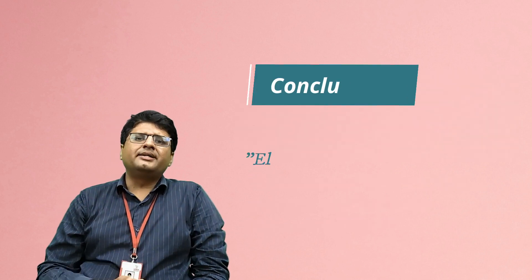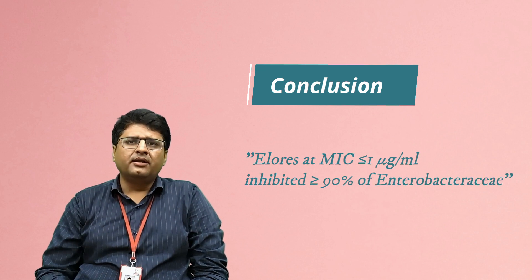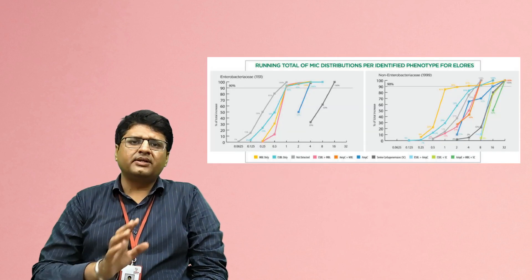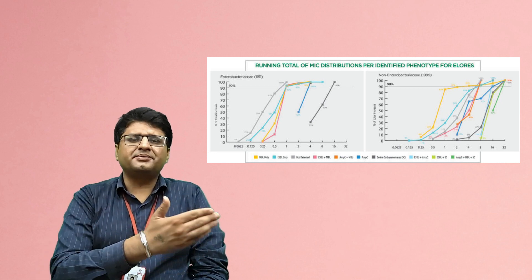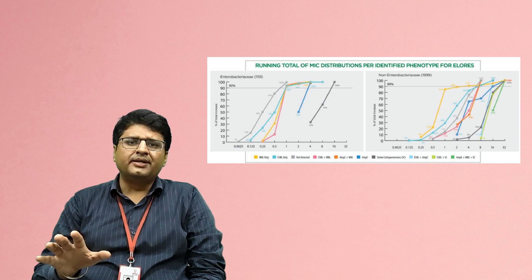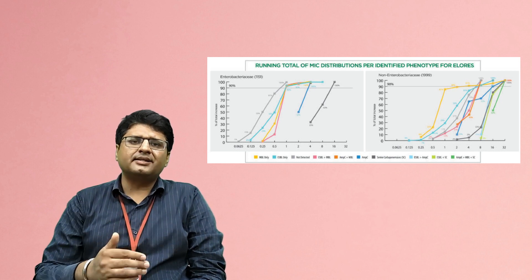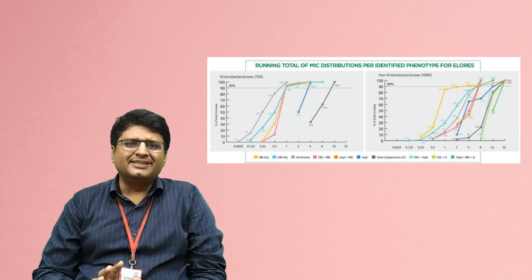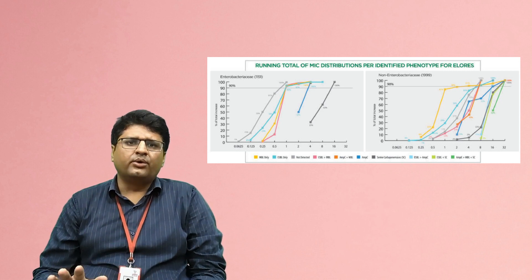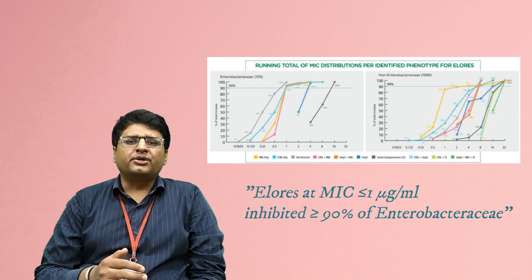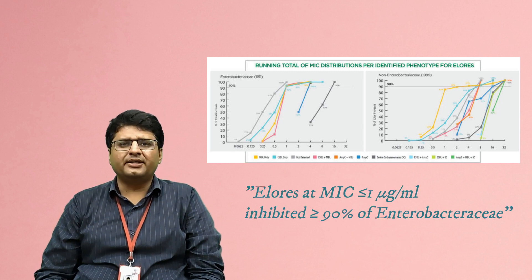LORES at an MIC of 1 µg/mL or less inhibited 90% or more of the Enterobacteriaceae. Two charts are shown — one for Enterobacteriaceae (E. coli and Klebsiella pneumoniae) and one for non-Enterobacteriaceae (Pseudomonas aeruginosa and Acinetobacter). Across different resistance groups including ESBLs, MBLs, and serine carbapenemases, the running total of MIC distributions for LORES is reported in these charts.